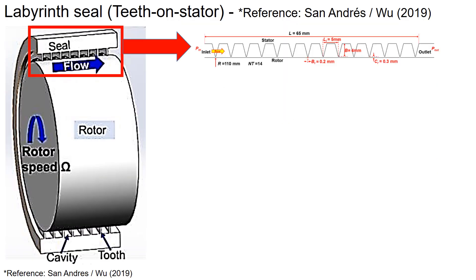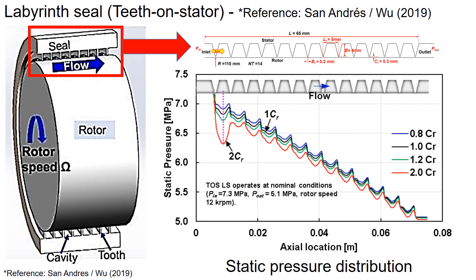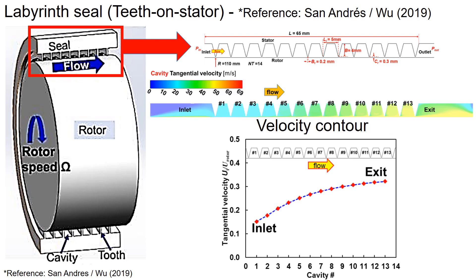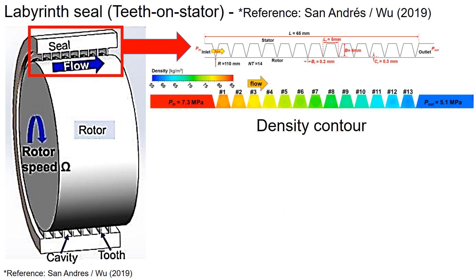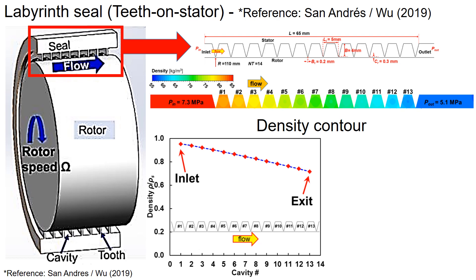Let's take a look at an example of a teeth-on-stator configuration. In this plot, we observe a decrease in static pressure along the seals towards the outlet, while the velocity tends to increase towards the seal exit. We can also see the density distribution through the cavity, with the density decreasing towards the exit.